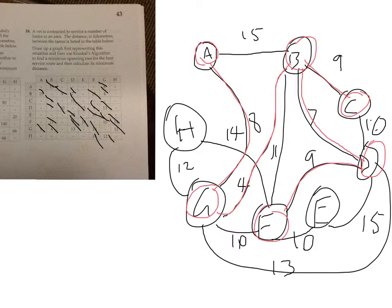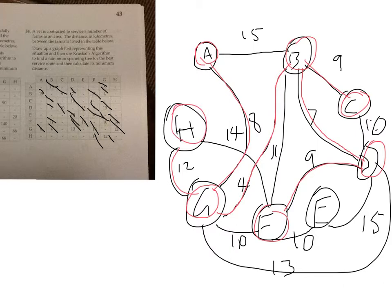I'm not going to connect F and G because that would make a loop — it's already connected up to the network. The only one not connected now is H, so I'll do the 12 here because it's the smallest of those two. Now everyone's connected up — oh wait, E needs one too. So E needs connecting as well.